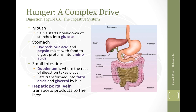The process of eating starts in the mouth, where saliva begins the breakdown of starches into glucose while we're chewing. Carbohydrates are broken down into glucose. In the stomach, hydrochloric acid and pepsin mix with food to digest proteins and break them down into amino acids. In the small intestine, specifically the duodenum, the rest of digestion takes place — fats are transformed into fatty acids and glycerol by bile. The hepatic portal vein then transports these products to the liver.